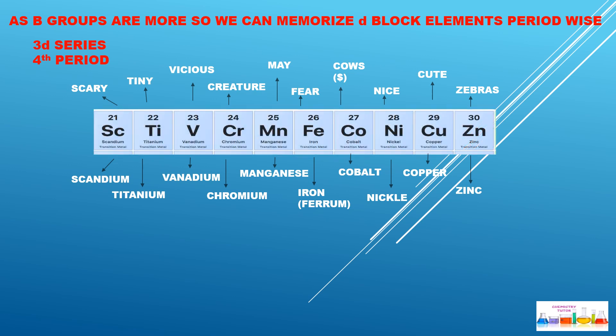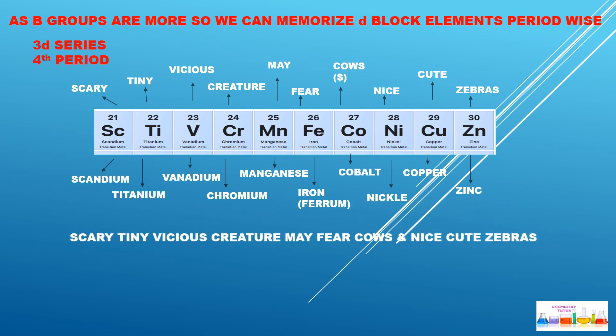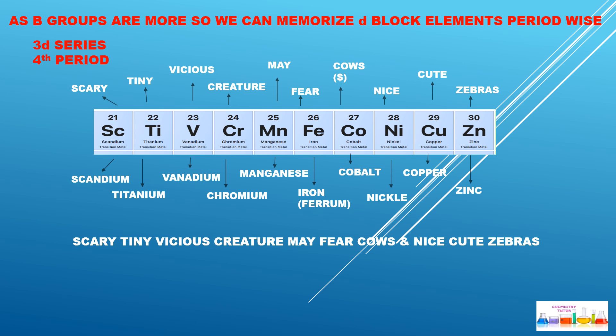Let's take the 3d series, which is the fourth period. The mnemonic is: 'Scary tiny vicious creature may fear cows and nice cute zebras.' Scary = Scandium, Tiny = Titanium, Vicious = Vanadium, Creature = Chromium, May = Manganese, Fear = Iron, Cows = Cobalt, Nice = Nickel, Cute = Copper, Zebras = Zinc. Just learn this phrase: 'Scary tiny vicious creature may fear cows and nice cute zebras.'